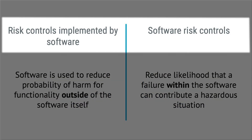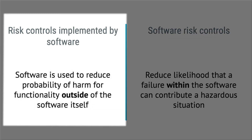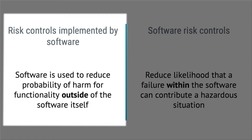Let's start and clear up the confusion about software risk controls and risk controls implemented by software. The wordings are similar, but the meaning is quite different. Risk controls implemented by software — that is when the software is used to reduce the probability of harm for functionality outside of the software itself. For example, the goods coming out from a steam sterilizer are very hot and can cause burns to operators. To minimize the risk of harm, the software can prompt a warning on a user interface — this is a risk control measure, but it's not a software risk control measure.